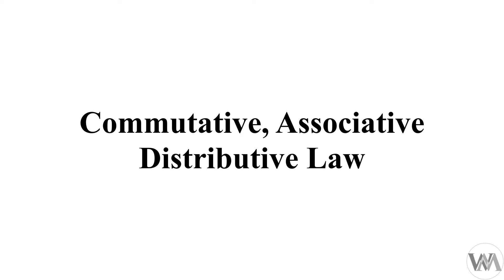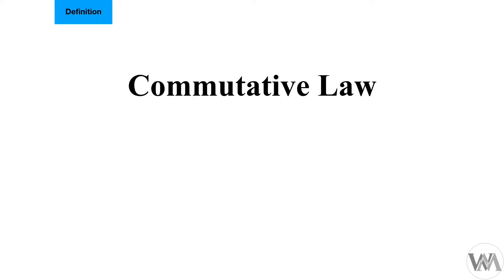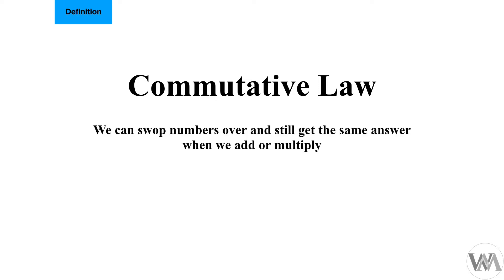Let's go on to the first law: the commutative law. The commutative law states that we can swap numbers over and still get the same answer when we add or multiply. What do we mean by swapping numbers over? Let's say for example we have two numbers and an operator: five plus two.